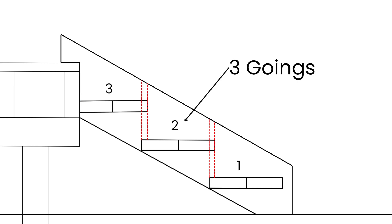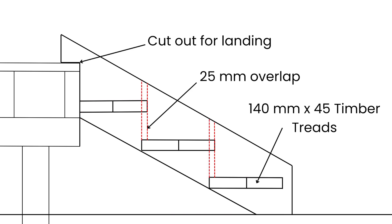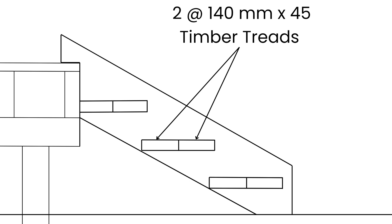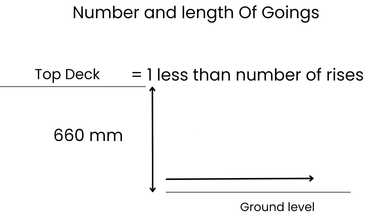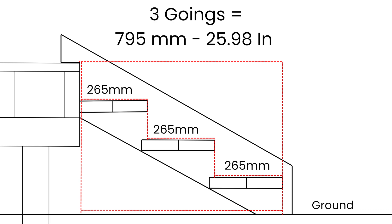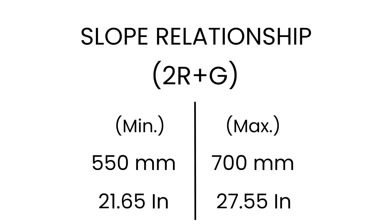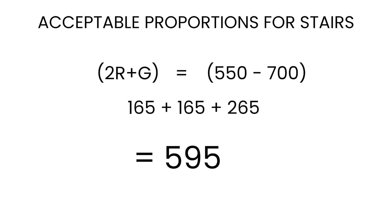The next step is to work out the number and size of the goings, which are the stair treads. I don't have a restricted landing point so I'll choose a 265 millimetre going with a 25 millimetre overlap, using two pieces of 140 by 45 millimetre timber with a 10 millimetre gap between each going. To confirm the stairs fall into an acceptable slope relationship, I'll use the ratio 2R plus G — two risers plus the going — which needs to equal between 550 and 700 millimetres, ensuring the stairs are comfortable and safe to walk up and down.